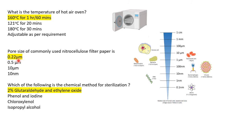Next: the pore size of commonly used nitrocellulose filter paper is what? Options are 0.22 micrometer, 0.5 micrometer, 10 micrometer, or 10 nanometer. If you have an option of 0.45 micron, that is also correct, but here the option is 0.22 micrometer, which is the correct answer.